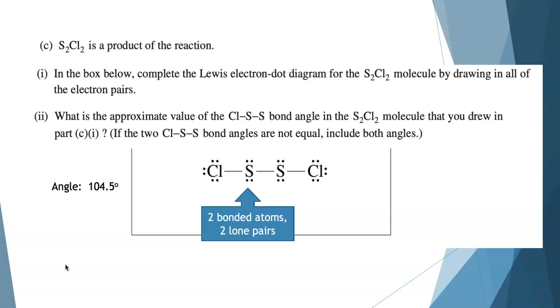When two of the domains are occupied by lone pairs, I'm thinking a bent geometry, which would have a bond angle of 104.5 degrees. They were more flexible in what they accepted for an answer here, but that's the answer I would expect my students to write down. That's what you needed to write for one point. If you had a mistake in your Lewis structure from part one, your answer here for the angle needs to be consistent with that. Make sure they match.